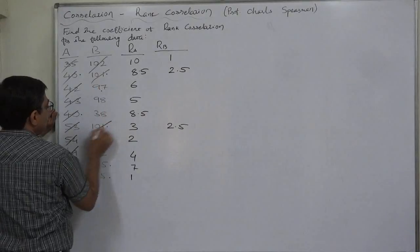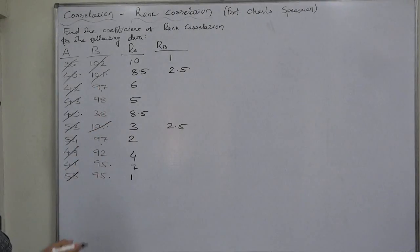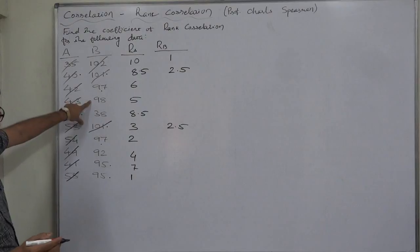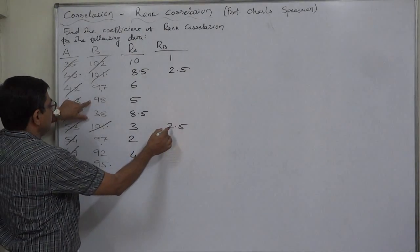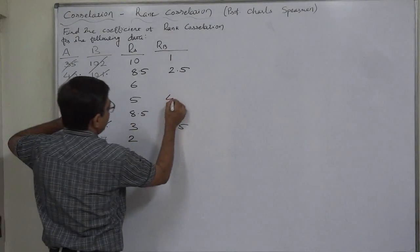Now, after 101, which is the highest value? It is 98. We have already used 2 and 3 for 101. So now it is turn of rank 4.